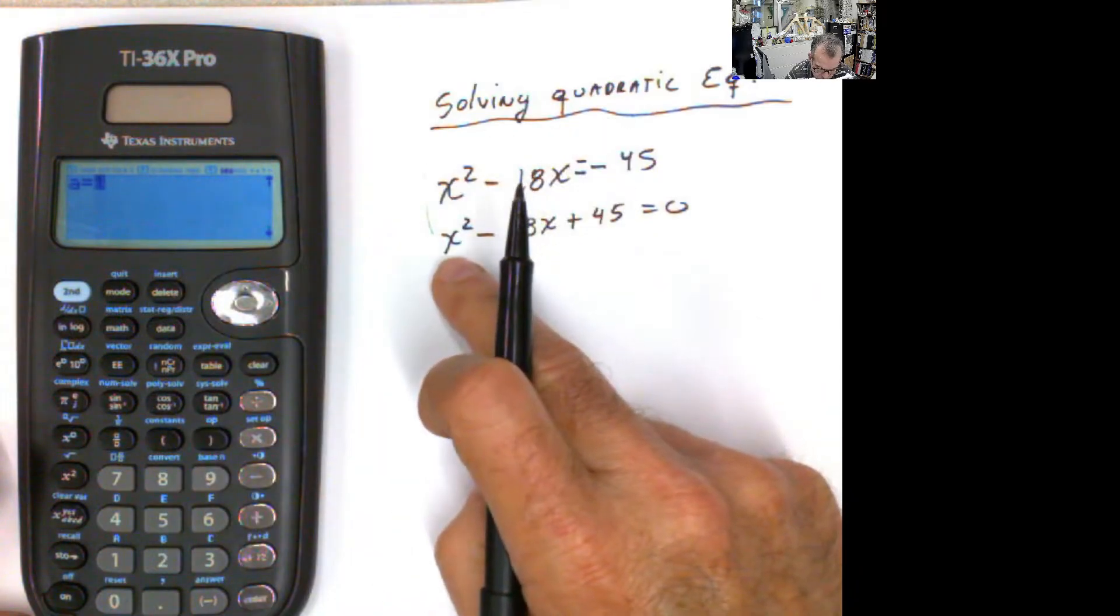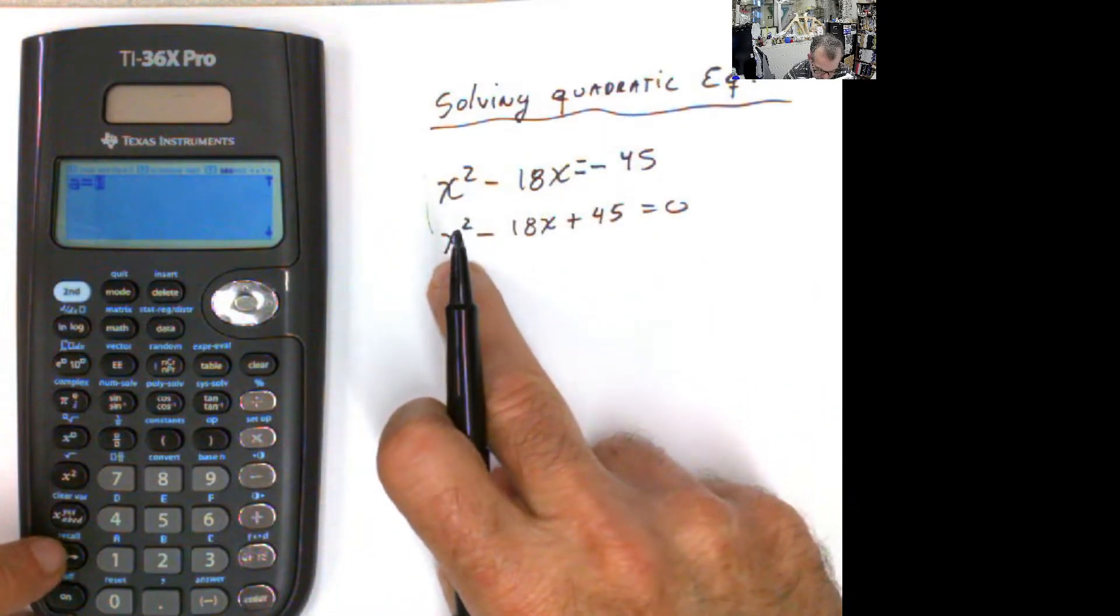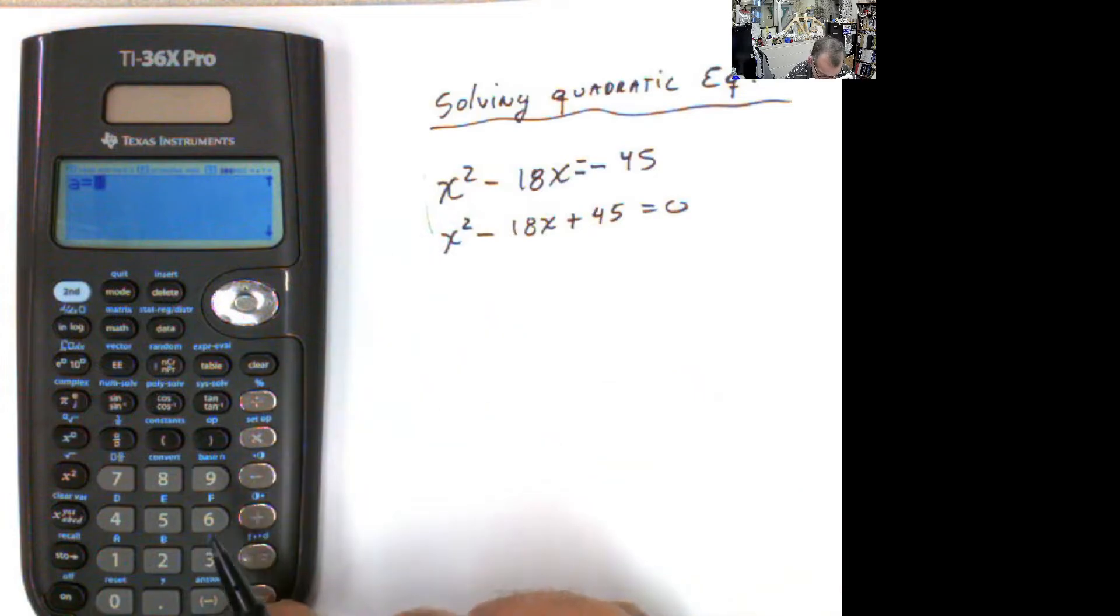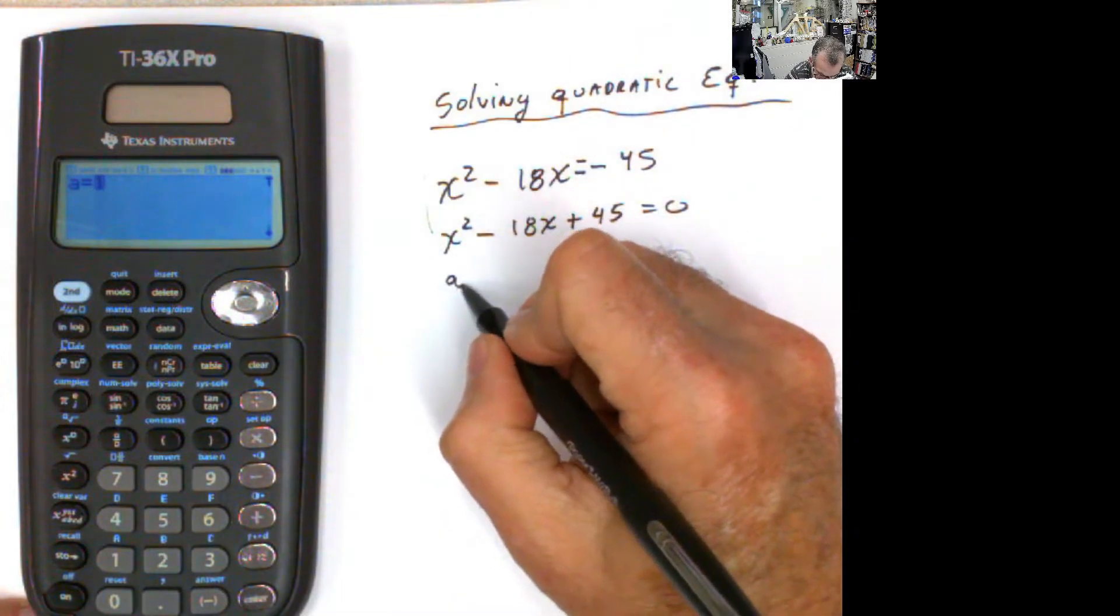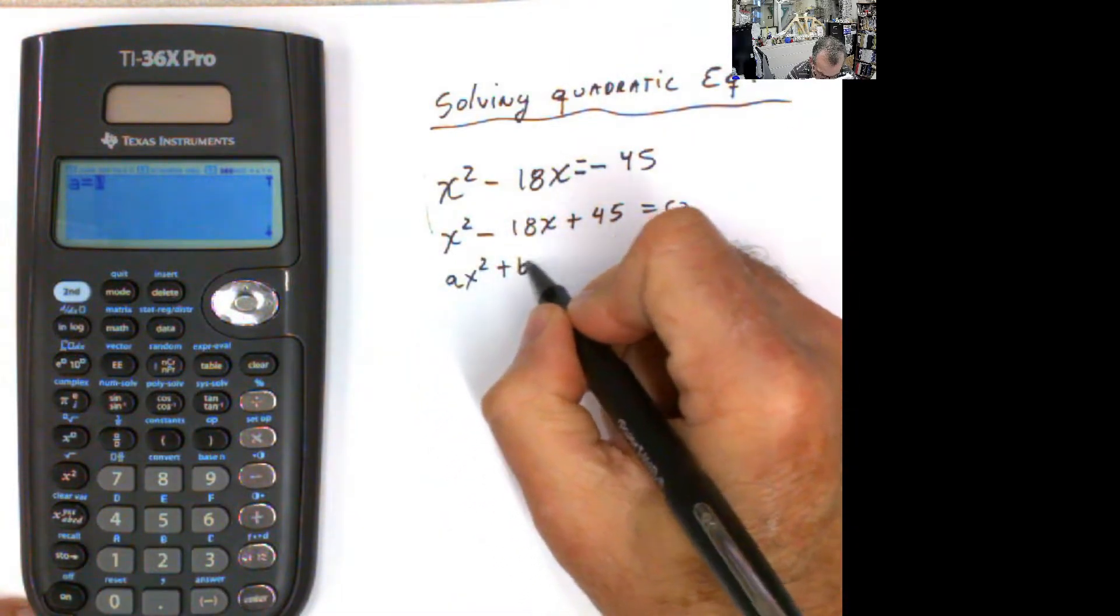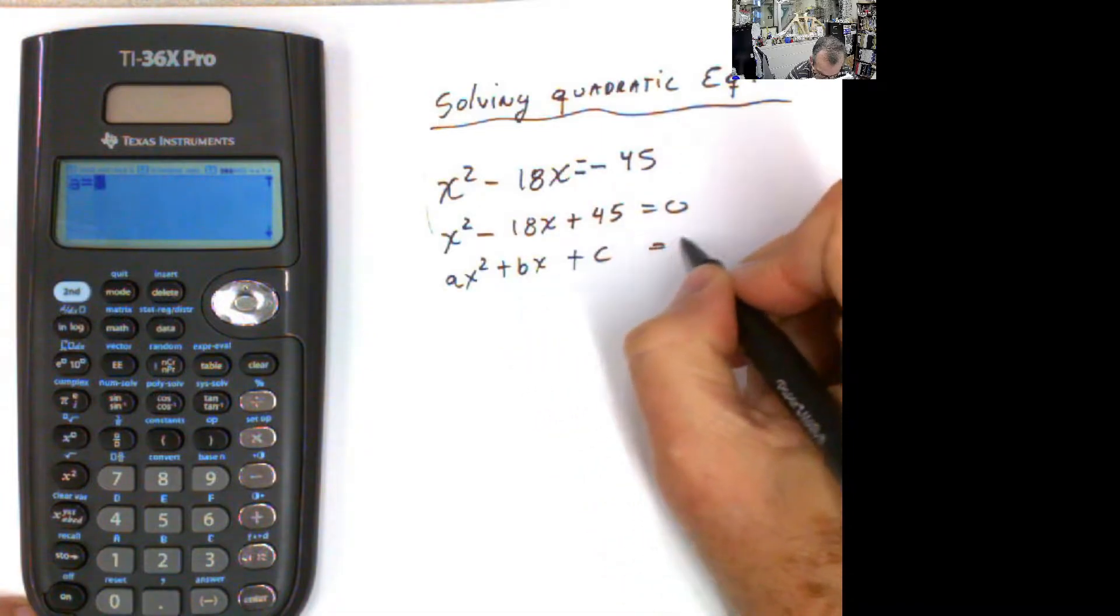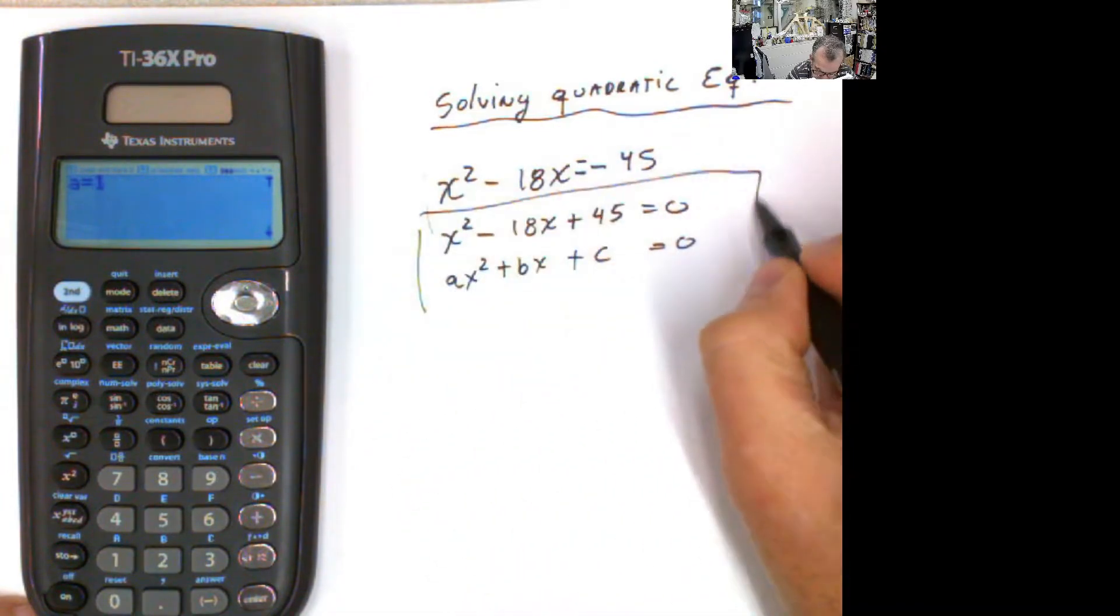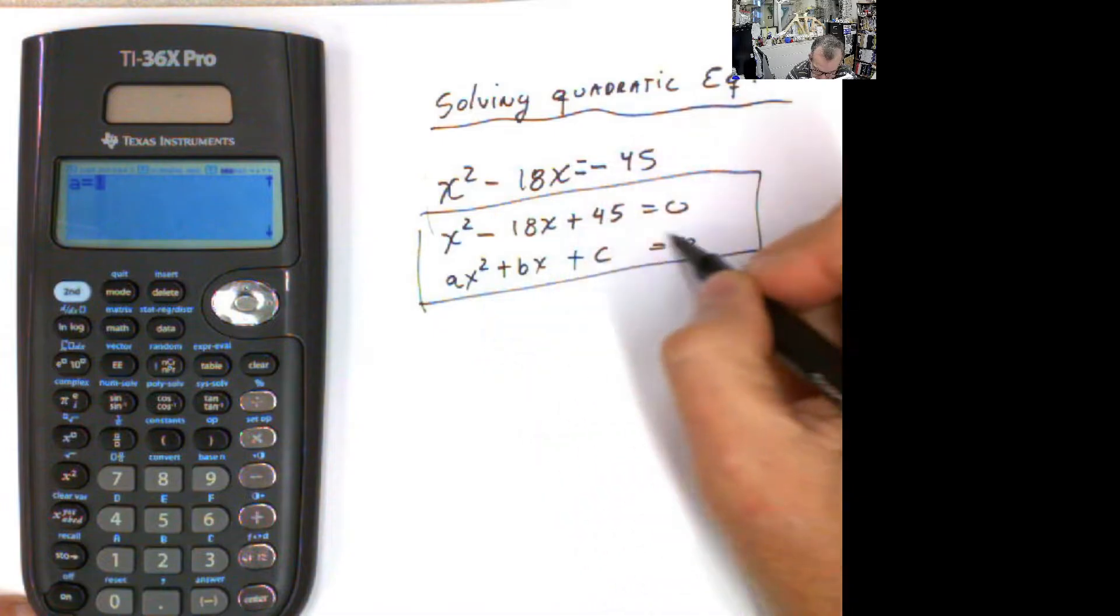It just asks you for the coefficients. In this case, the coefficient of the x squared, a. Remember, this is ax² plus bx plus c equals zero. That's the shape, and these are the coefficients it is asking you.